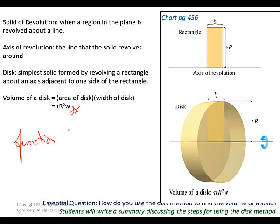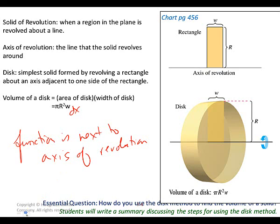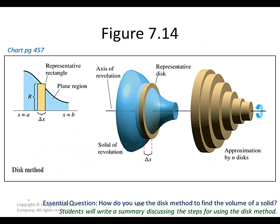Get rid of the square root by squaring both sides. So this one is x equals y squared — that's your dx. The other function is y equals x minus 2, which means x equals y plus 2. Now we're going to use those two functions to integrate. We're integrating with respect to y; the function is on the y-axis from zero to one.